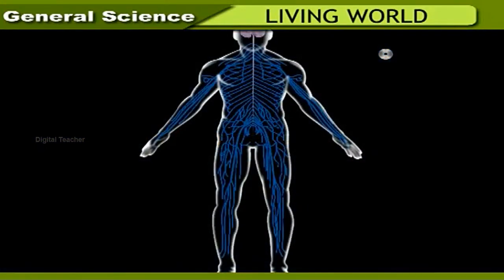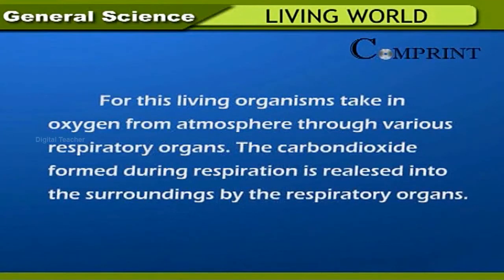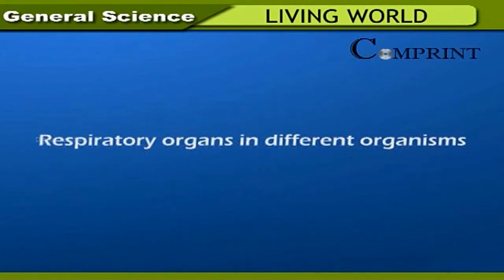Man needs energy to carry out different activities and takes food to get that energy. The food taken by organisms contains energy — it is digested and carried to different organs of the body. This energy is used to carry out various metabolic activities. For this, living organisms take in oxygen from the atmosphere through various respiratory organs, and the carbon dioxide formed during respiration is released into the surroundings.